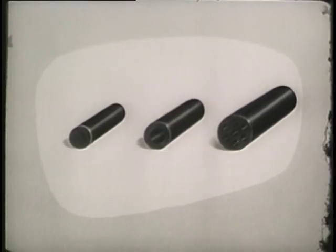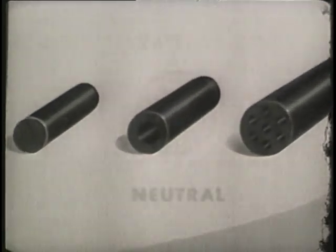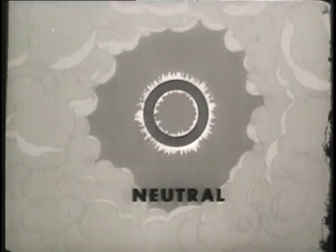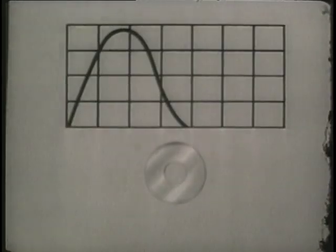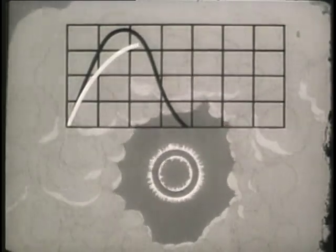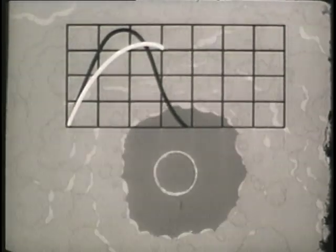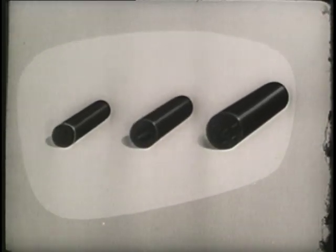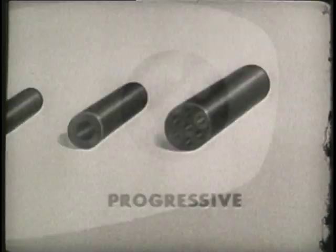The medium-sized grain with a single hole is called a neutral grain. In this form of grain, the burning is slower at first but the burning surface remains constant during the burning period. Thus the maximum pressure is not as high as with the digressive type, nor does the pressure drop off as sharply when the projectile moves. The large grain with the seven lengthwise holes is called a progressive grain.